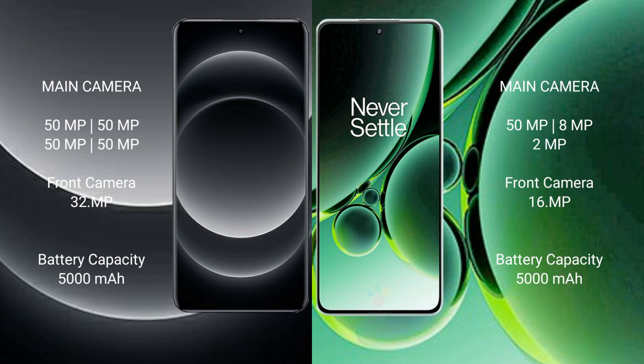Xiaomi 14 Ultra has a 5000mAh battery with 90W fast charging support. OnePlus Nord 3 has a 5000mAh battery with 80W fast charging support.